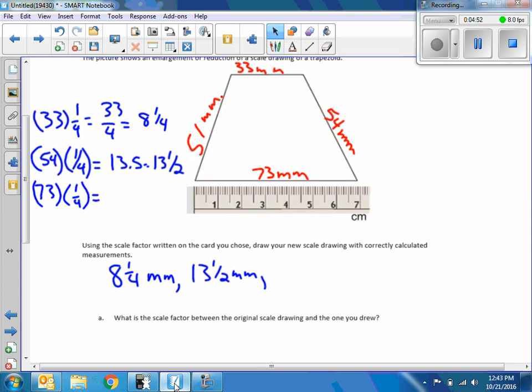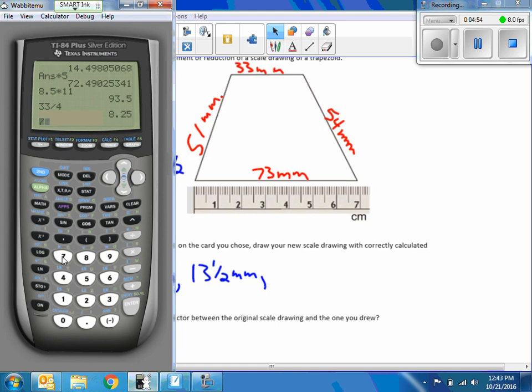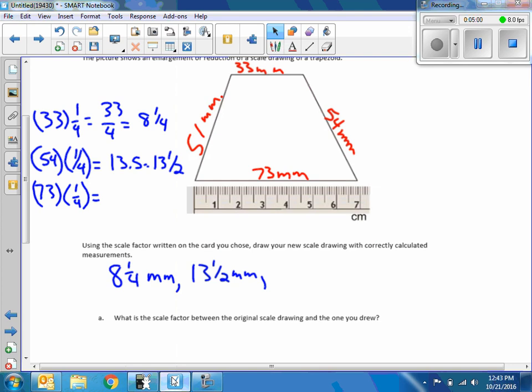To speed things up, 73 divided by 4 equals 18 and one-quarter. So it's 18 and one-quarter millimeters.